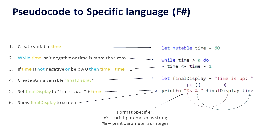So we have an integer that is time that's assigned as 60. While time is more than zero we will assign time to time minus one. Then we have a final display.